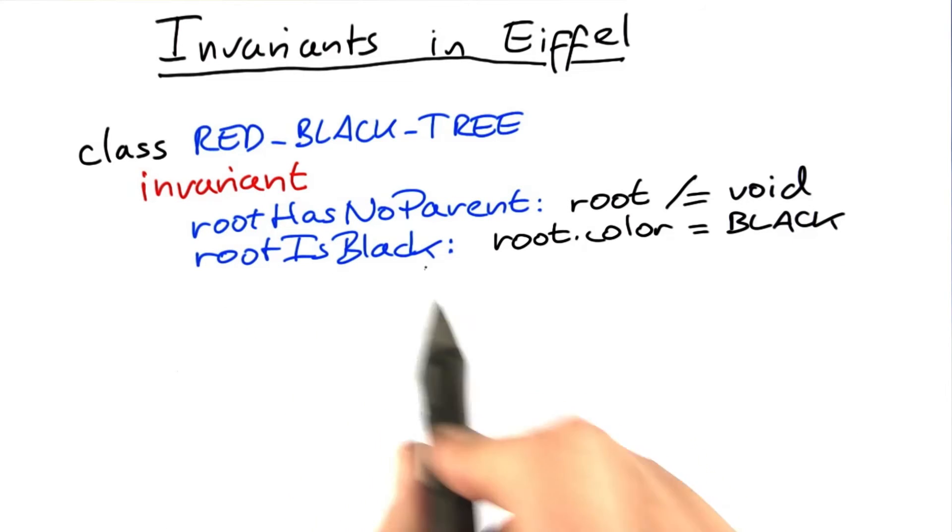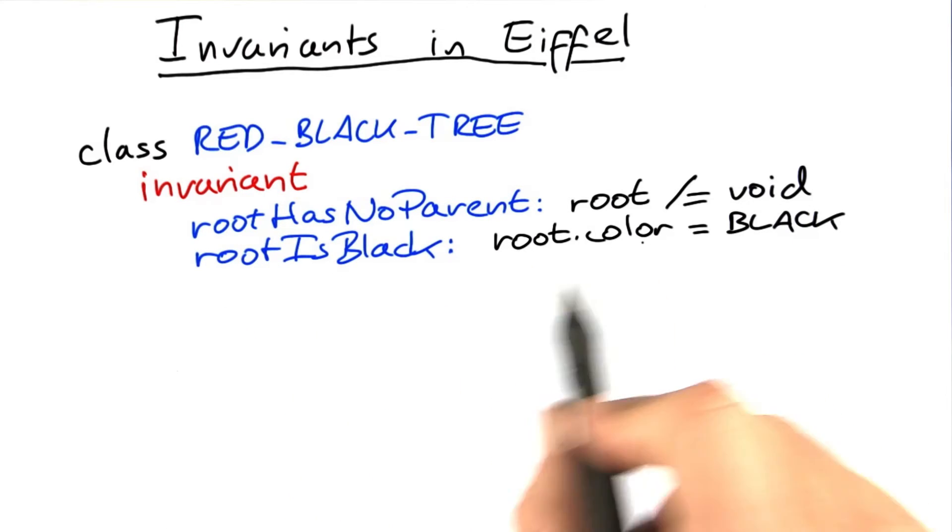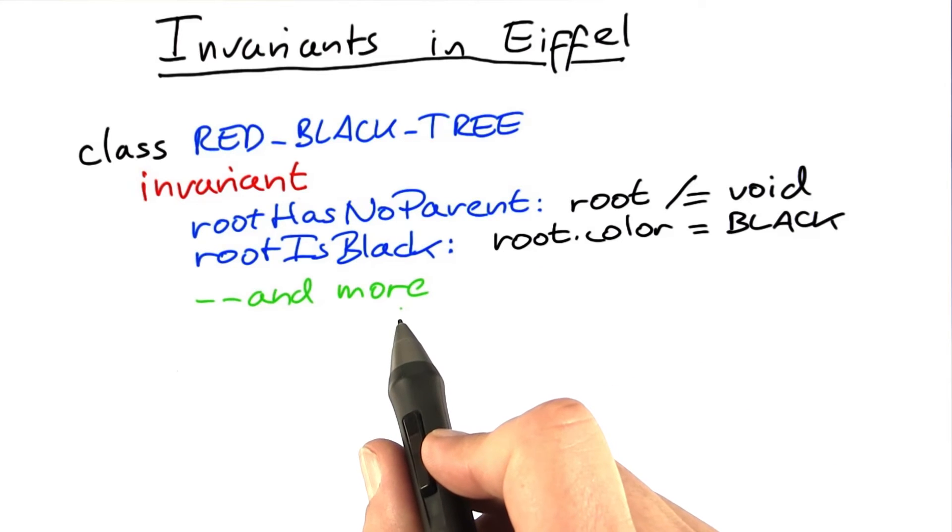Here we have the invariant 'root is black', and this simply checks the color attribute of the root node to be black. And of course, there's more to it.